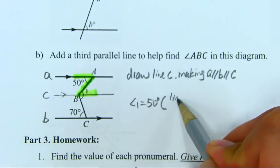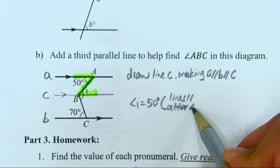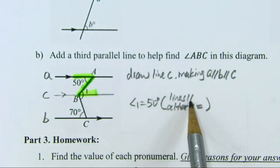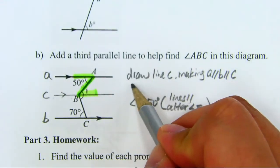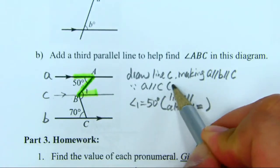Because lines are parallel, alternate angles are equal. But you have to write the sentence, the reason: because A is parallel to C, you made them.